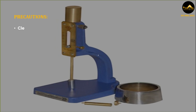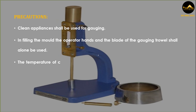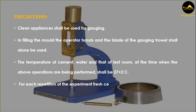Precautions: Clean appliances shall be used for gauging. In filling the mold, the operator's hands and the blade of the gauging trowel shall alone be used. The temperature of cement, water, and that of the test room at the time when the above operations are being performed shall be 27 ± 2 degrees centigrade. For each repetition of the experiment, fresh cement is to be taken.